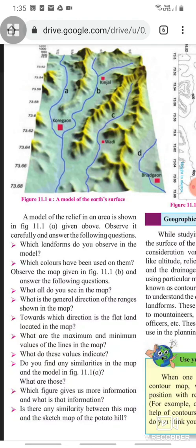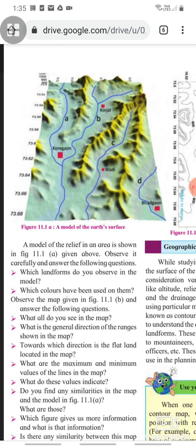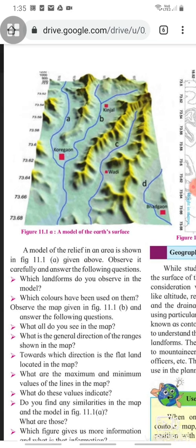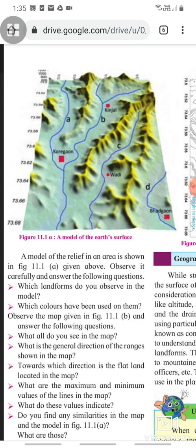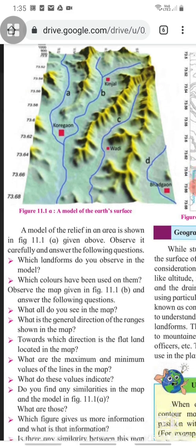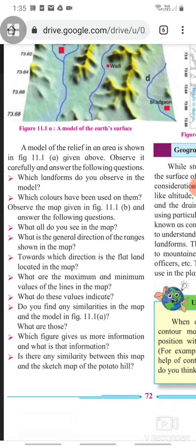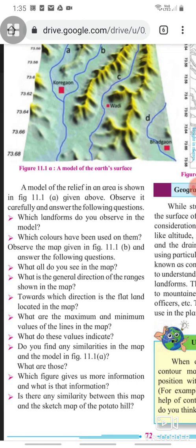A model of the relief in an area is shown in figure 11.1a given above. The figure 11.1a is showing you a model of the earth's surface. Observe it carefully and answer all the questions. Question 1 is, which landforms do you observe in the model? Which colors have been used on them?